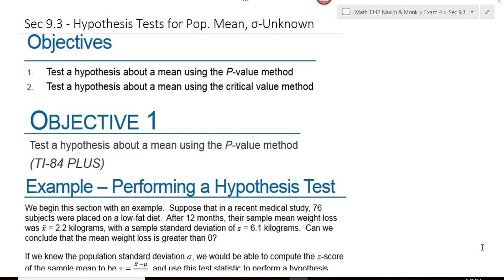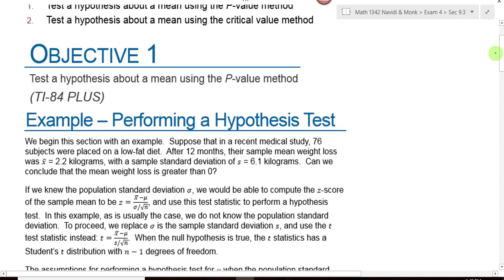Section 9.3 is hypothesis test for population means when the population standard deviation is unknown. That just means we're going to be doing a t-test. We use a t-distribution when we're testing a claim about a mean and the population standard deviation is unknown.